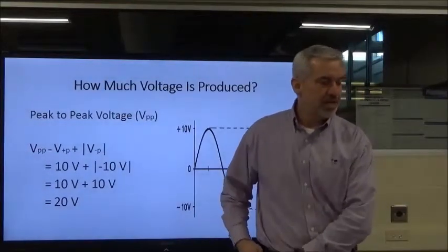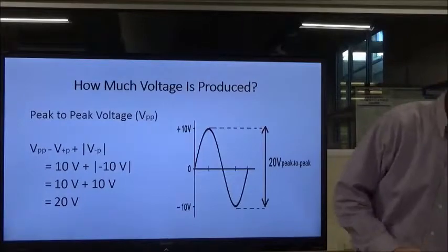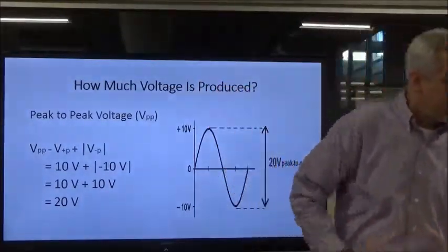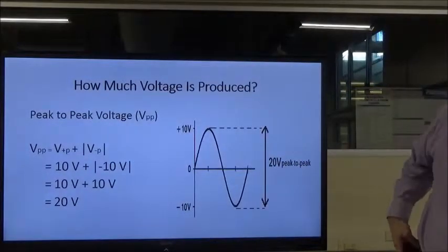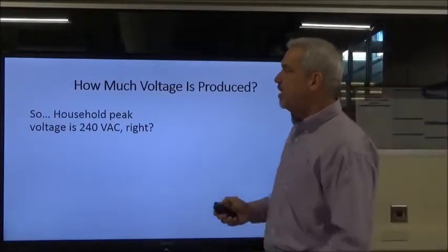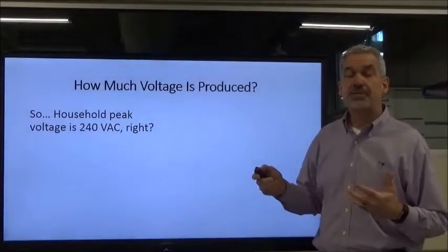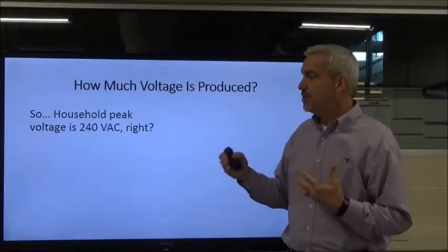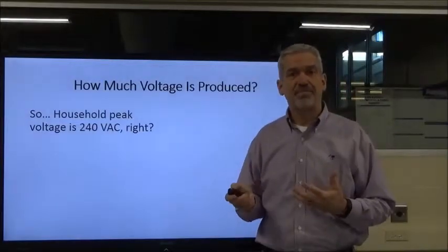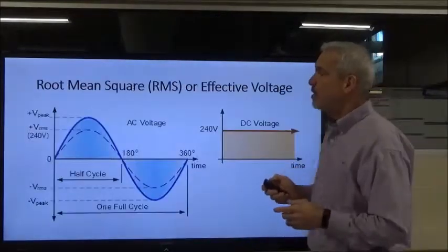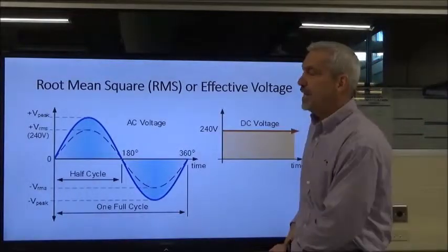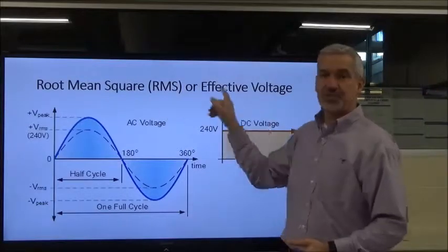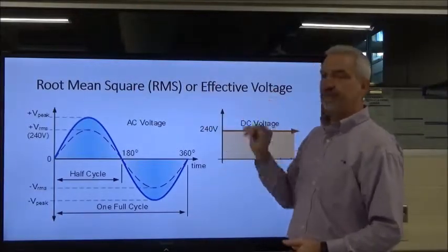That is not what is measured when we take our meter and stick it in our wall outlet. That is a different type of value. So if I asked you whether our household voltage coming into our breaker panel being fed from the utility company is 240 volts peak — nope, wrong, it's not. What we're measuring with our meter is root-mean-square voltage, or effective voltage — same thing.